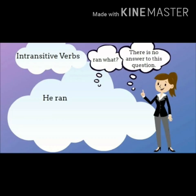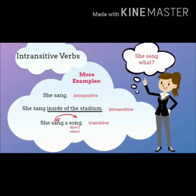Moreover, intransitive verbs do not answer the question 'what.' For example: 'He ran.' That's it — 'he ran what' is not mentioned, so it is an intransitive verb. Here are some more examples to clarify the difference. 'She sang' — it's an intransitive sentence because it's not answering the question 'what did she sang.'